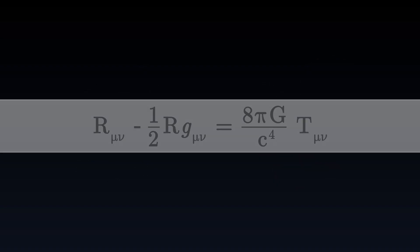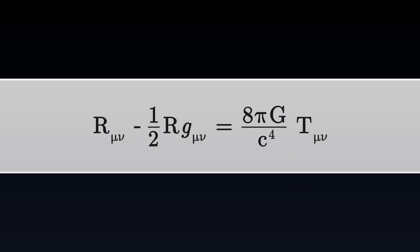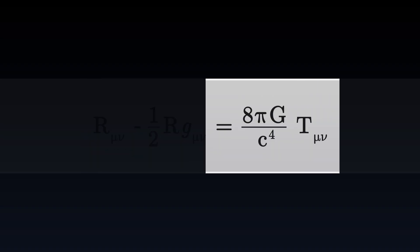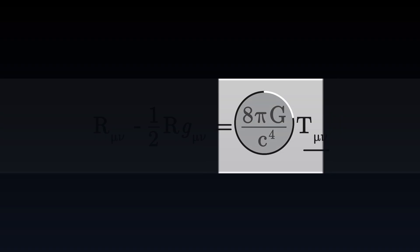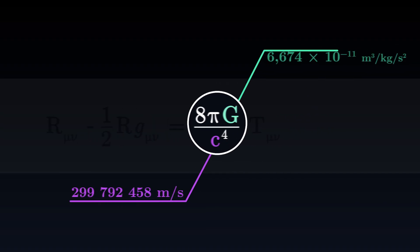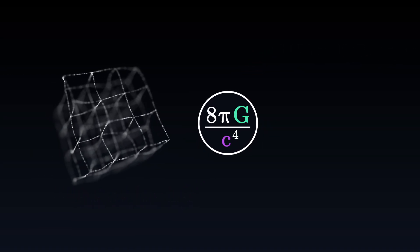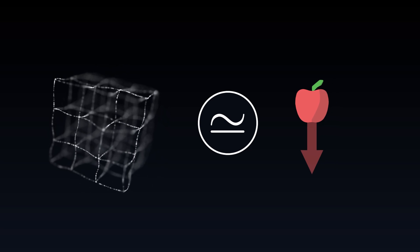Usually, the Einstein equation takes the following form. All terms to the left of the equation represent the geometry of space-time. They involve the Ricci tensor, the Ricci scalar, and the metric tensor. The term to the right of the equation corresponds to the content — it is simply the energy-momentum tensor multiplied by a certain constant which determines the intensity of gravity in the universe. This constant depends on the speed of light and on Newton's gravitational constant. It is chosen so that relativity is compatible with older theories, and recovers Newtonian gravity when the pull is weak.